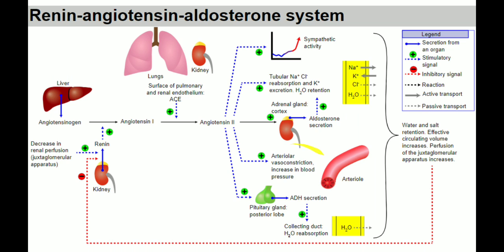Angiotensin 2 has four important roles. First, arterial vasoconstriction, which increases blood pressure — this is the main function. Second, aldosterone secretion: aldosterone is a hormone that helps in tubular reabsorption of sodium and chloride ions in the glomerulus of the kidney, moving ions back into the bloodstream. Third, potassium excretion. Fourth, water retention — water retention occurs when excess fluid builds up inside the body.